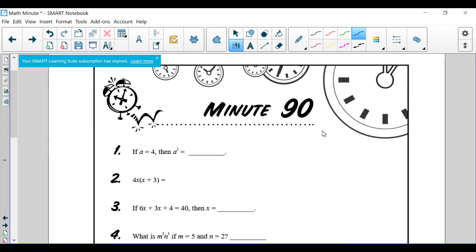Alright, let's go over number 1. It says a equals 4, and a squared is what? So we're going to write 4 squared, and 4 squared is equal to not 8, because that's 4 times 2. It's going to be 16, because it's 4 times 4. If you got that, give yourself a star.